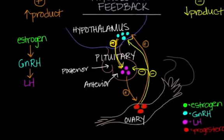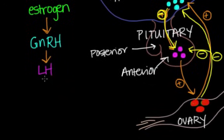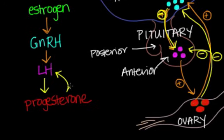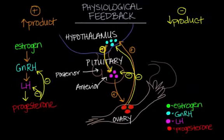Going back, we can see that LH caused the secretion of progesterone in the first place, and then progesterone goes back and works to inhibit further GnRH and LH release. That's how we maintain homeostasis, or balance, in our body — which is really important for maintaining molecular and physiological processes, so that nothing becomes too out of balance, too high or too low. That's the beauty of physiological feedback.